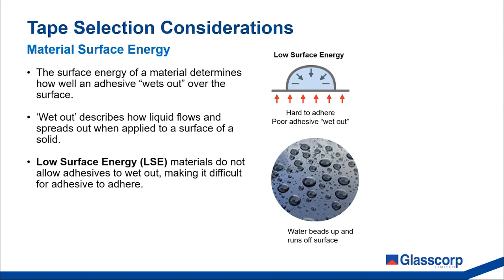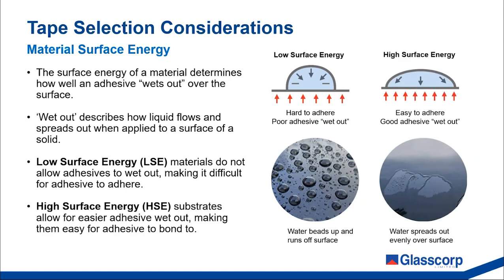Low surface energy materials do not allow adhesives to wet out, making it more difficult for adhesive to adhere. High surface energy substrates allow for more adhesive wet out, making it easier for adhesives to bond to. The photos shown here are taken from a car before and after being washed and waxed. Before washing, we have an example of a high surface energy surface where water spreads out evenly over the car body. After washing and waxing, the surface energy is reduced — water droplets bead up and run off the surface.